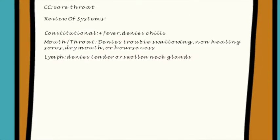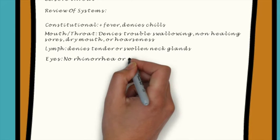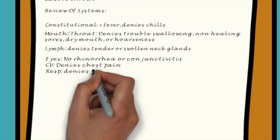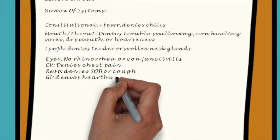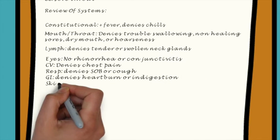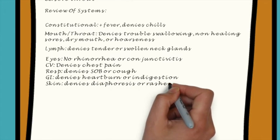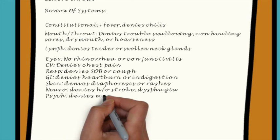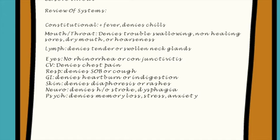If you asked and documented constitutional, no fever or chills, eyes, no watery eyes or conjunctivitis, ENT, no sore throat or congestion, cardiovascular, no chest pain or discomfort, respiratory, no shortness of breath or cough, GI, appetite good, denies heartburn, indigestion, nausea, or vomiting, lymph node, denies tender or swollen lymph nodes or glands, skin, no diaphoresis or skin rashes, neurologic, no history of dysphagia, stroke, or speech problems, psychiatric, patient denies memory loss or depression, then this could be a complete review of systems.